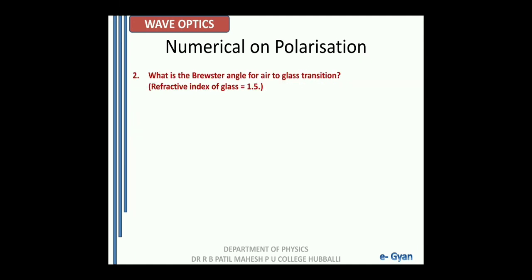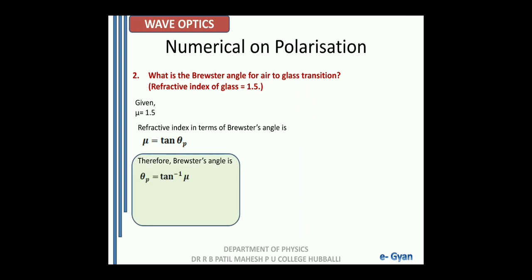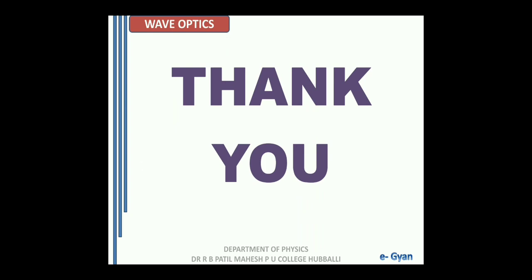Next numerical on polarization: what is Brewster's angle for an air-to-glass transition? The refractive index of glass is 1.5. From Brewster's law, mu = tan(θp), so Brewster's angle θp = tan⁻¹(1.5). On solving we get θp = 56.31 degrees. With this we finish the discussion of the chapter wave optics.